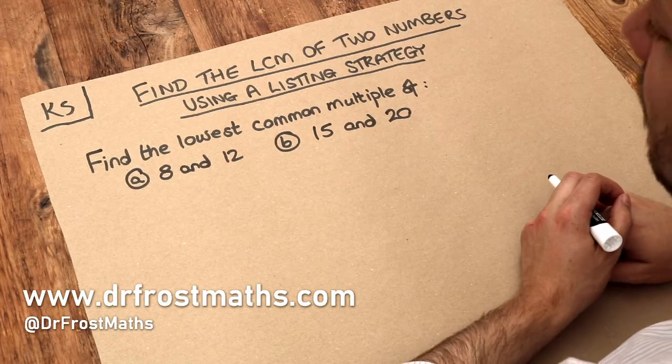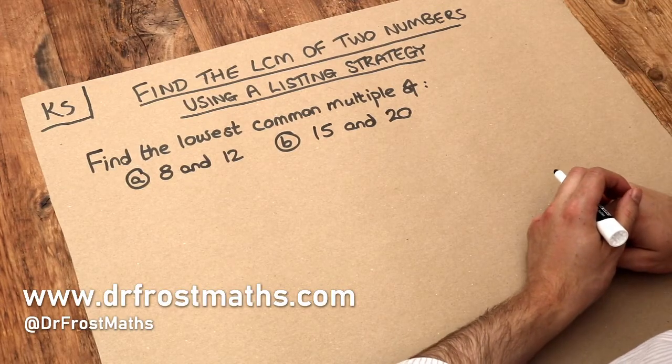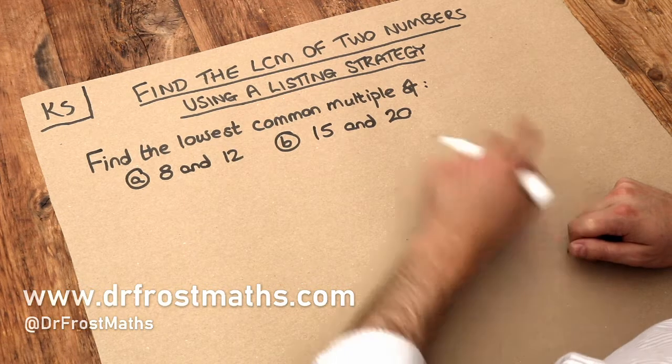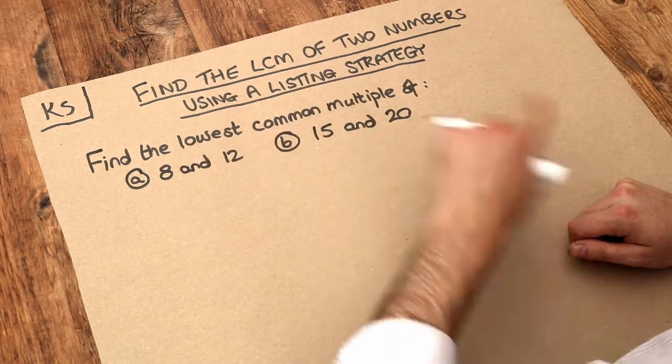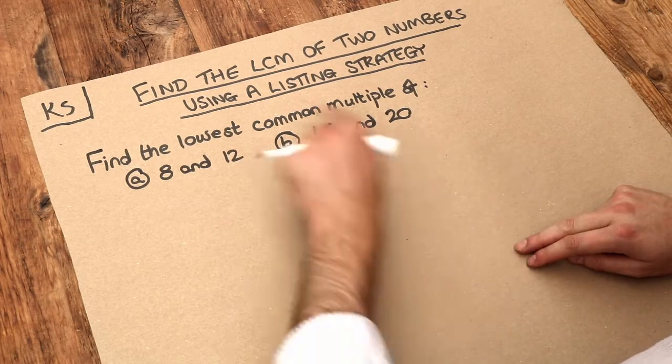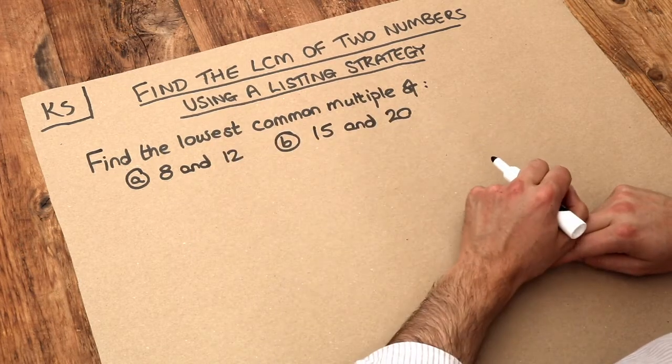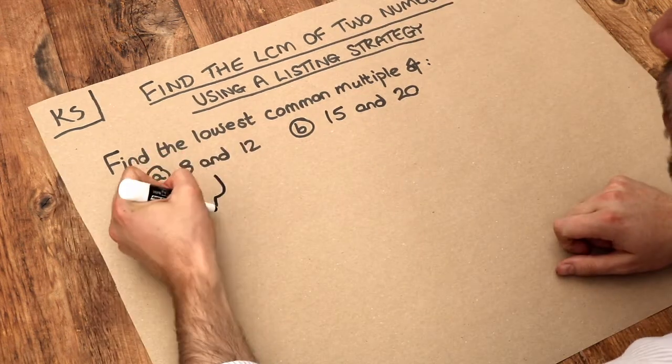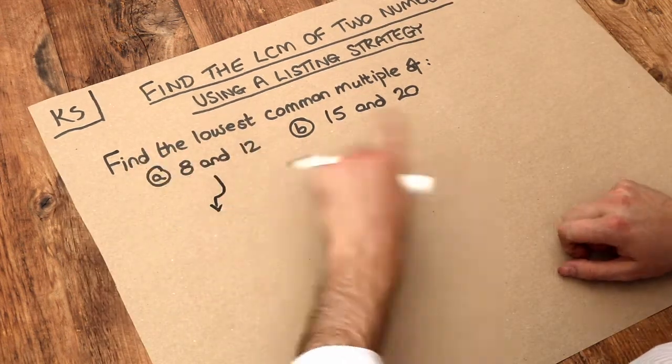Hello and welcome to this Dr. Ross Math's key skill video on finding the LCM of two numbers using a listing strategy. And what LCM stands for is lowest common multiple. Now let's reflect on each of these three words in working out what the lowest common multiple is. And let's use this example here where we're trying to find the lowest common multiple of 8 and 12.